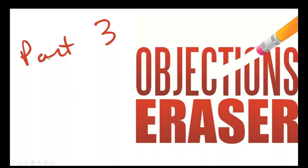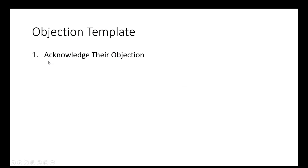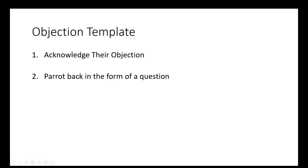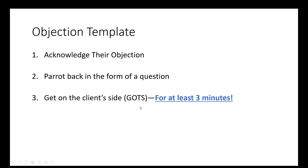So this is part three, the last part of how we overcome objections. Remember the objection template: we acknowledge their objection. If they say we don't like to pay fees to advisors, we say absolutely, 100%, you're exactly right — whatever we want to say to acknowledge the objection. Then we compare it back in the form of a question. We say, we wouldn't want to be paying fees to advisors, would we? So we pair it back in the form of a question and we get on the client's side for at least three minutes.